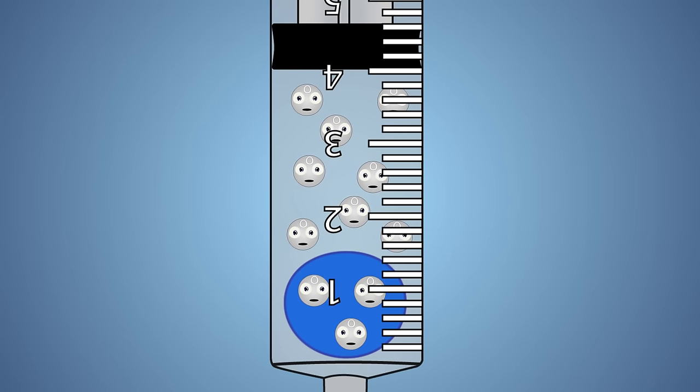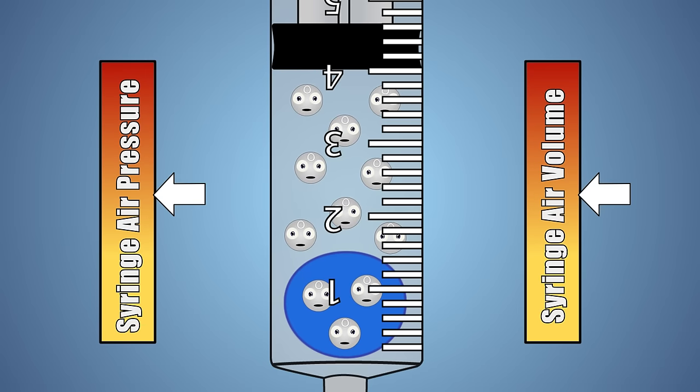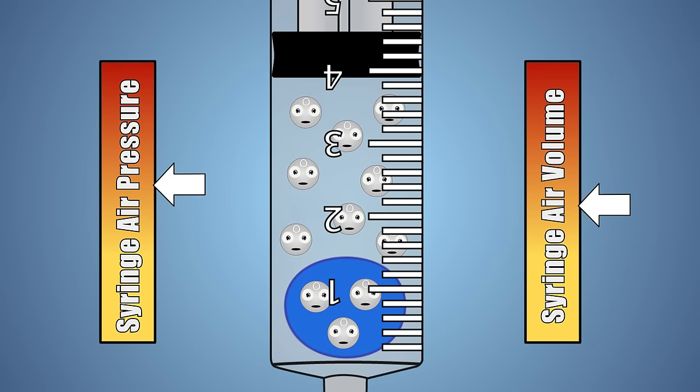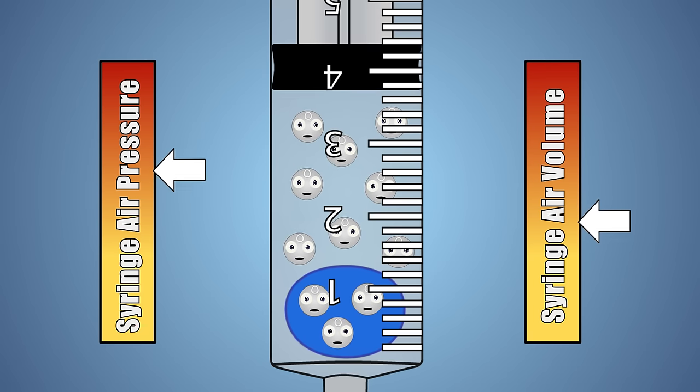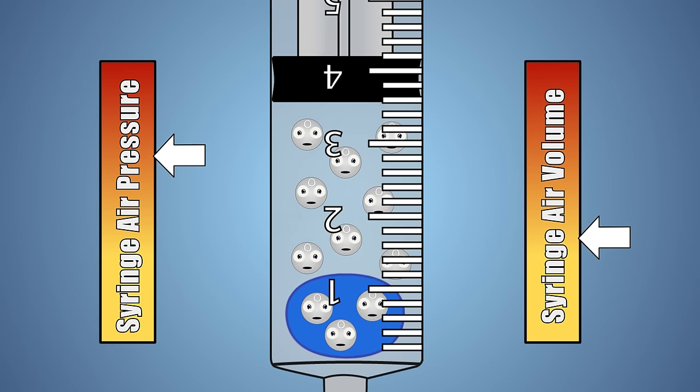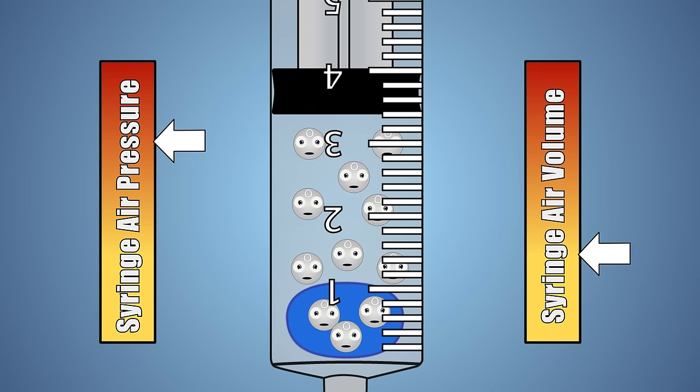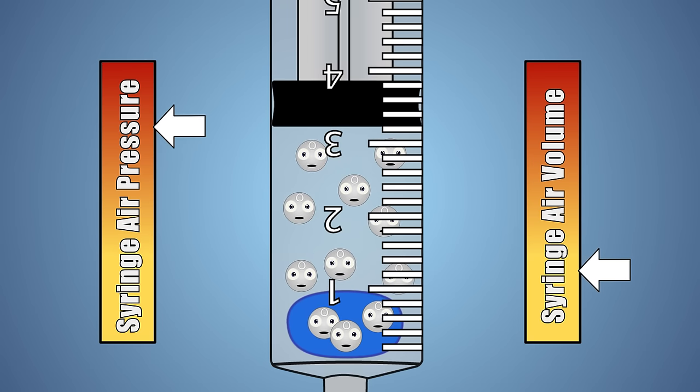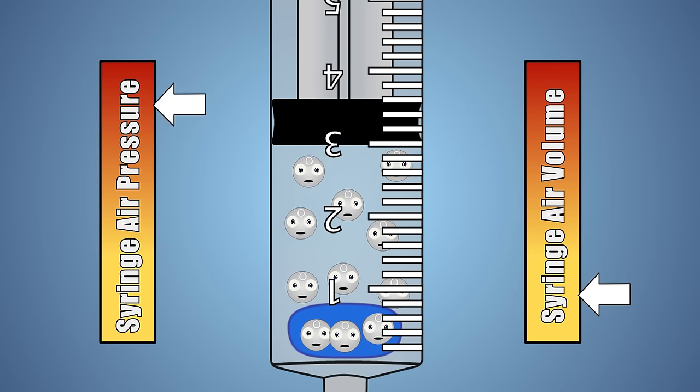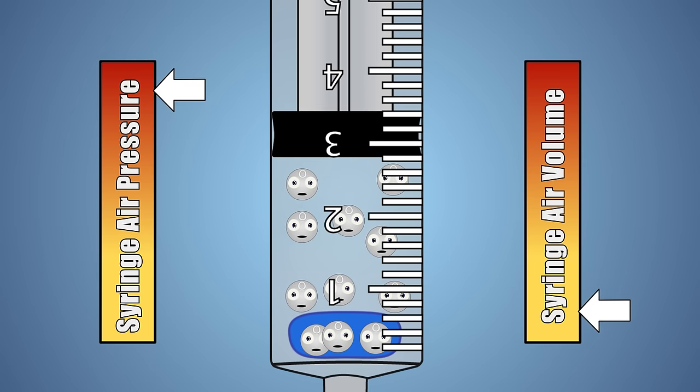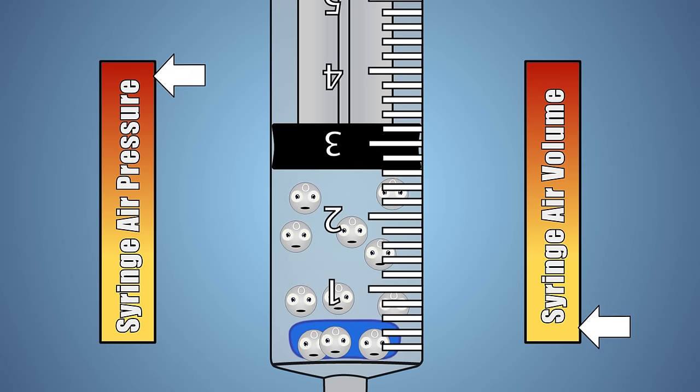When we press the plunger down, we are increasing the pressure being placed on the air molecules inside the syringe by reducing its volume. As the pressure increases, the amount of force placed on our air molecules increases, and they are forced closer and closer together, decreasing the volume of space that our gas takes up, and shrinking the size of our balloon.